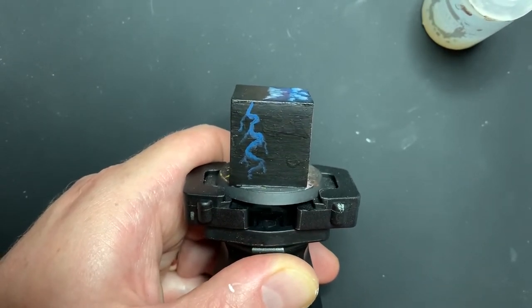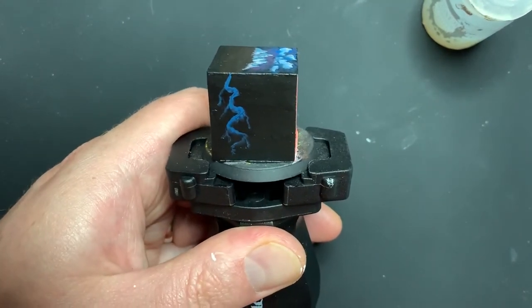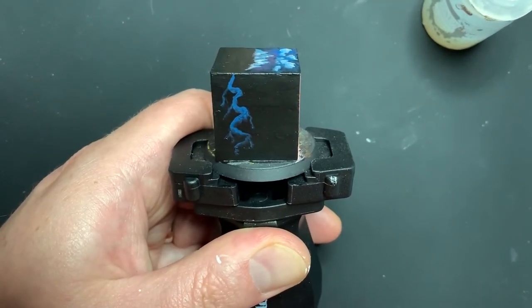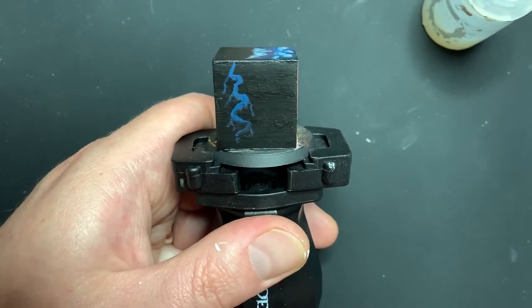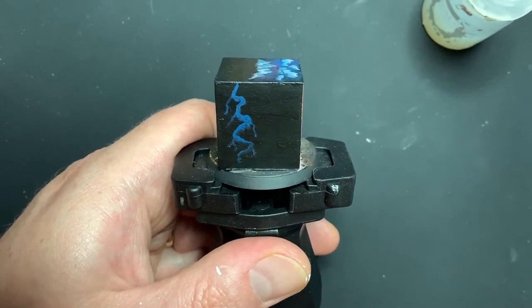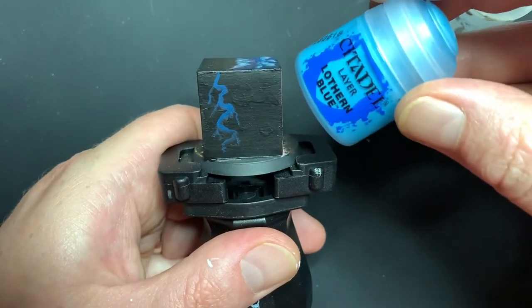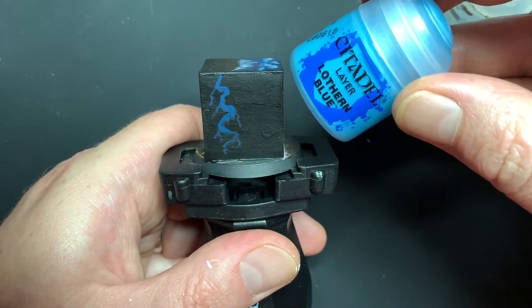I'm getting way more light on here than what it actually looks like. So to me, it's darker, but it's coming across pretty bright on camera, which is perfect for what I'm doing here. So what I'm going to do for the second layer is come in with a lighter blue, something a little more electric. So for this, I'm using Lothern Blue.